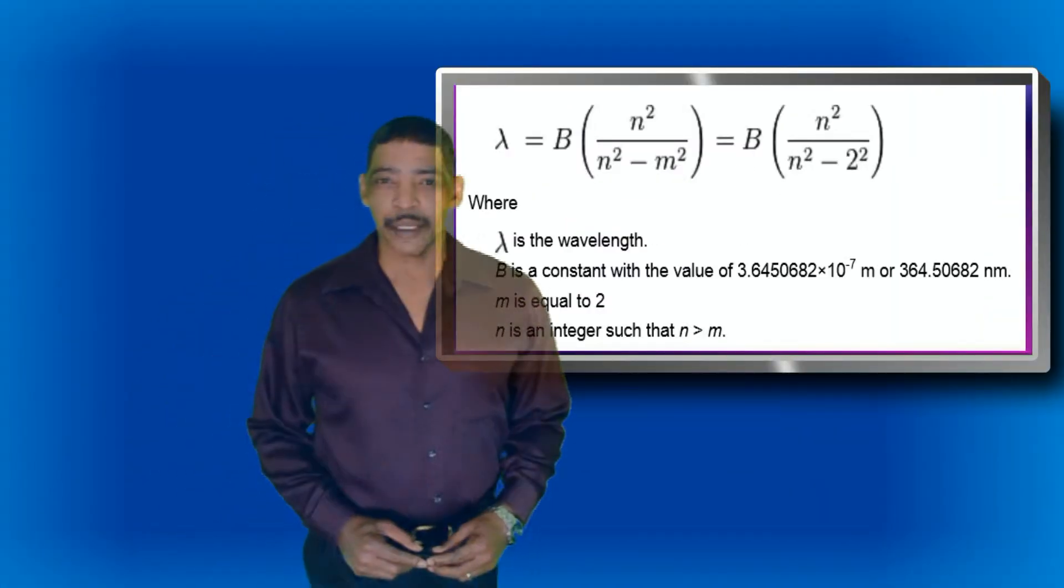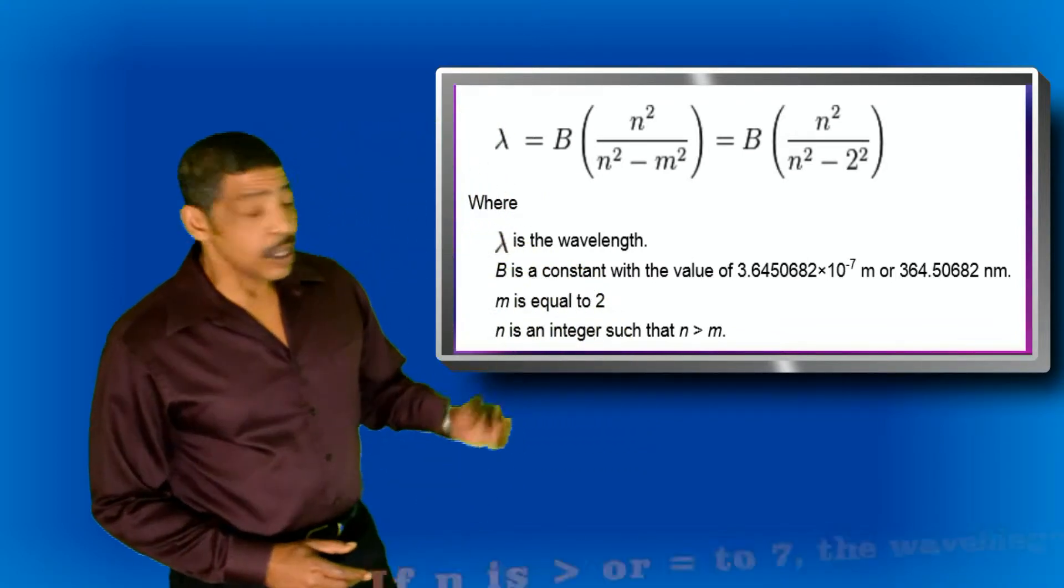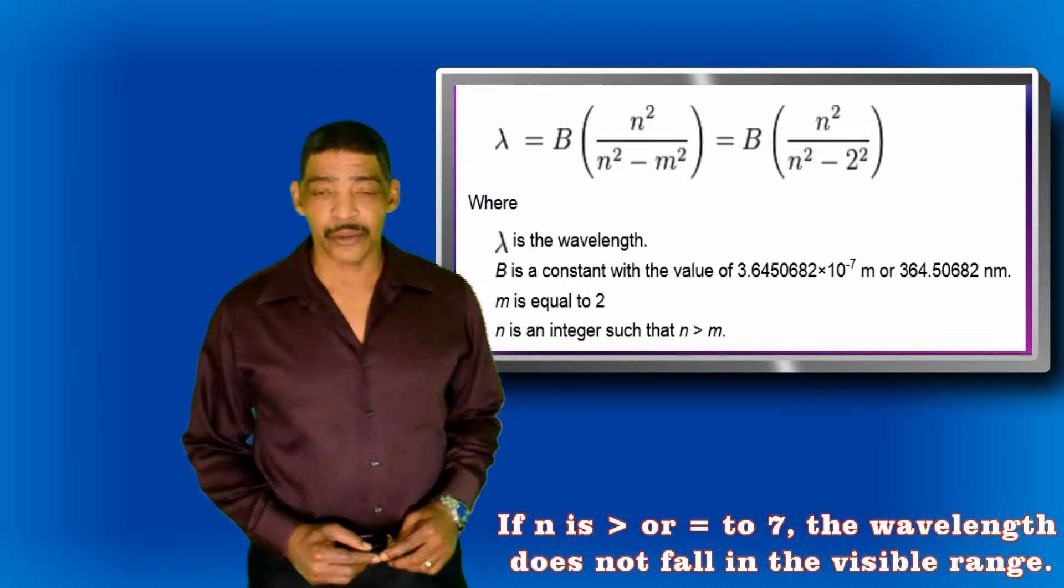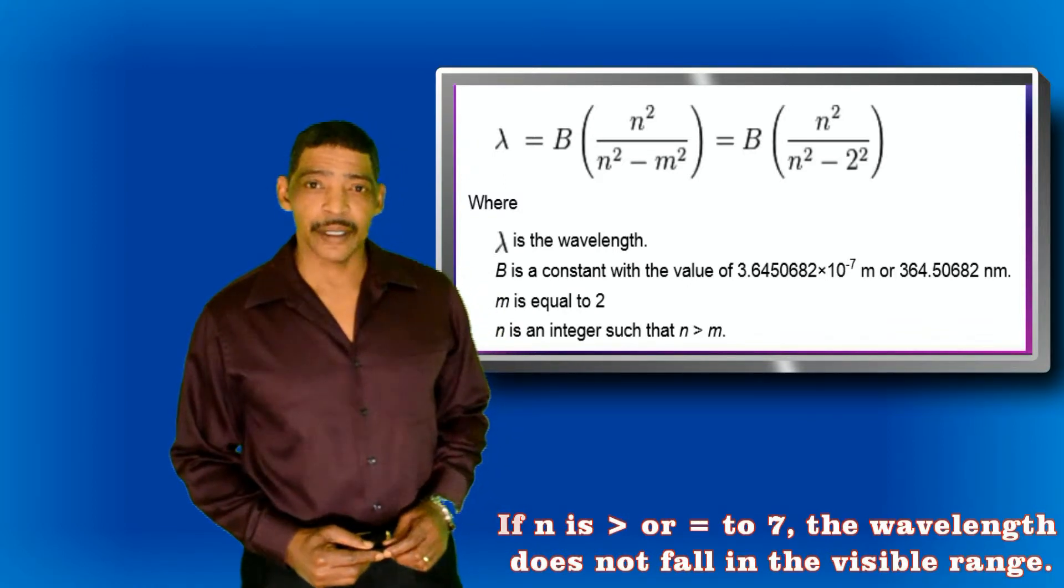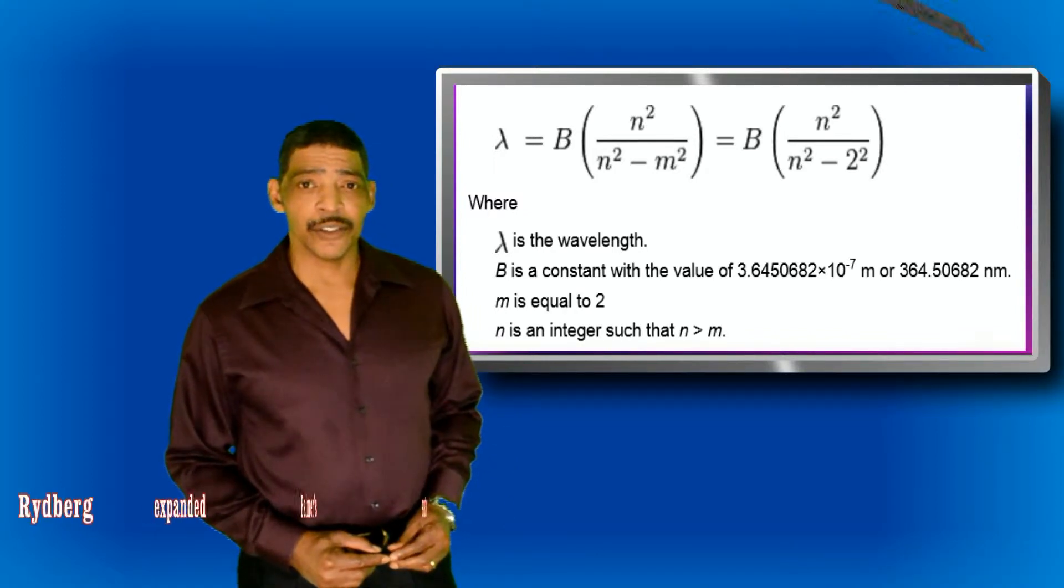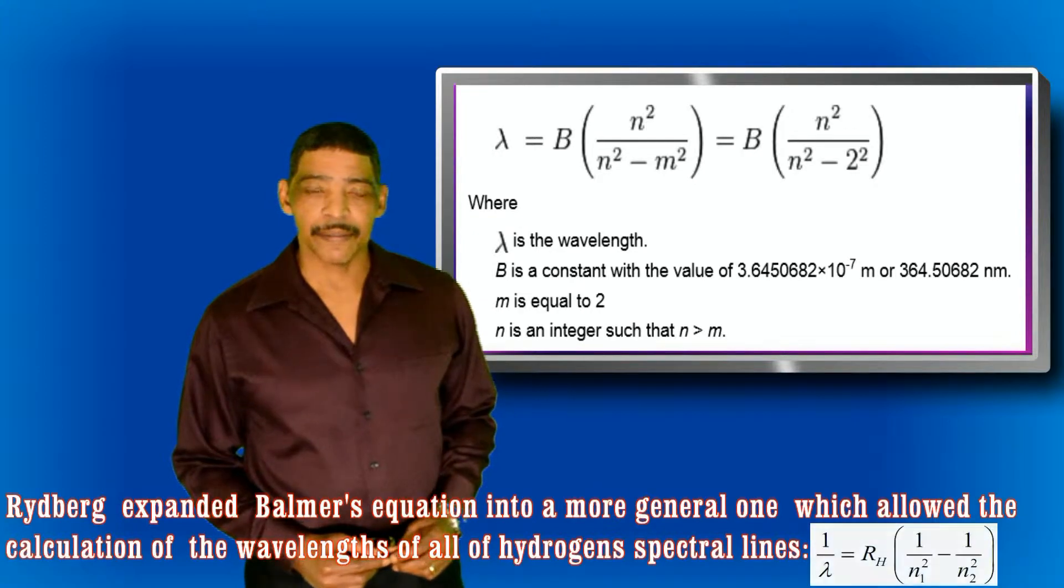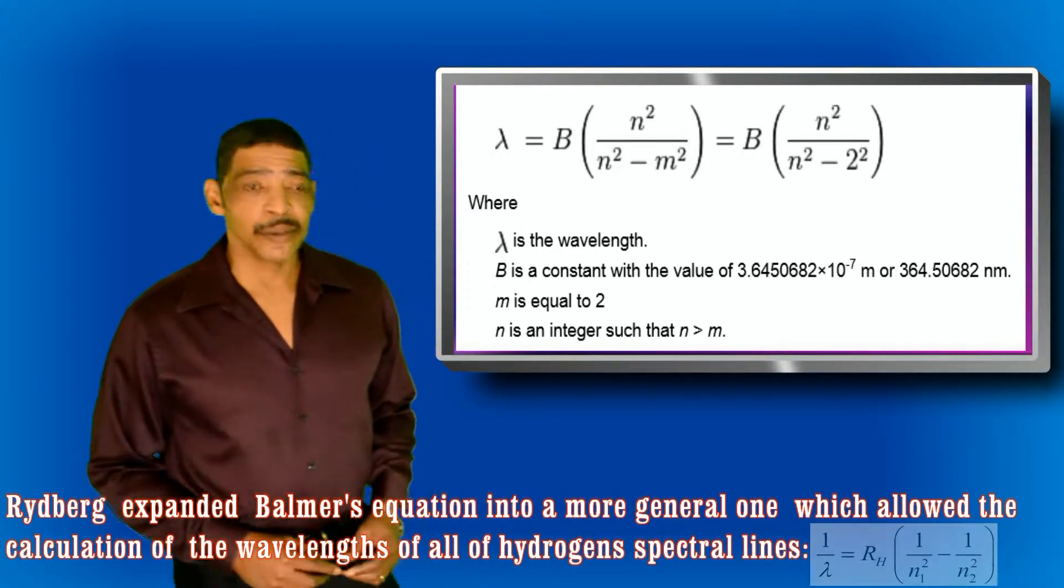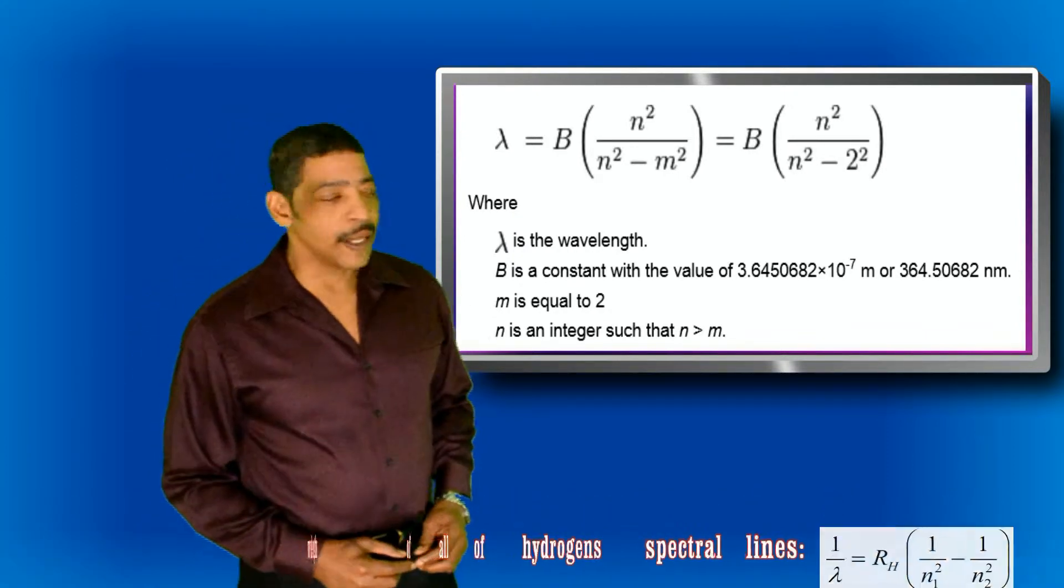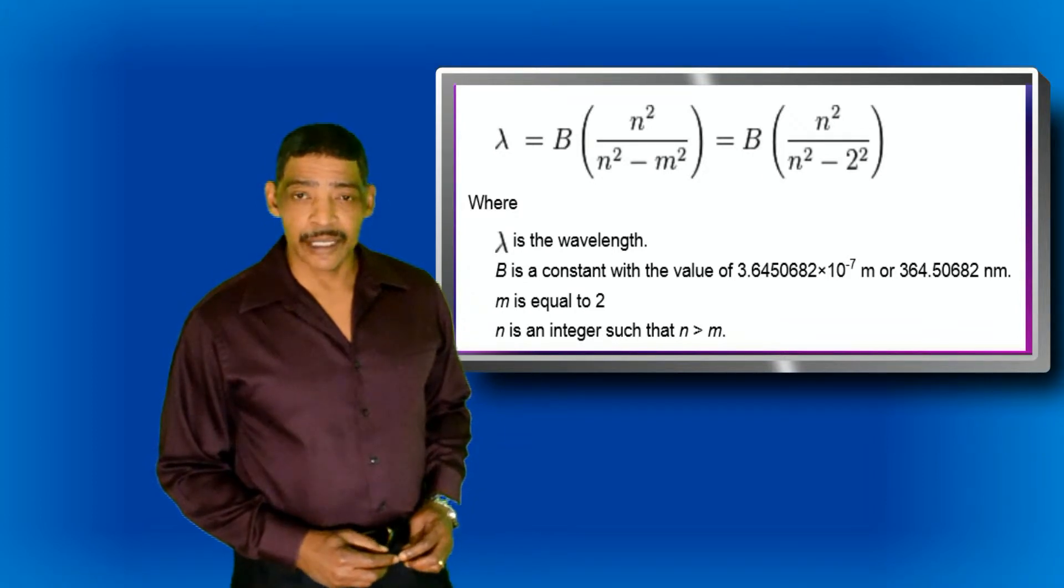In Balmer's formula, the wavelength lambda is equal to Balmer's constant times n-squared divided by n-squared minus m-squared, where m is equal to 2, and n is equal to an integer that's greater than 2 but less than 7. The value of Balmer's constant is 3.6450682 times 10 to the minus 7 meter.